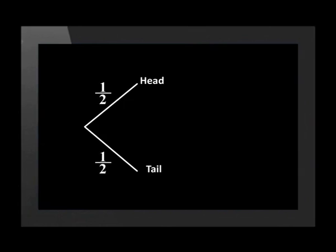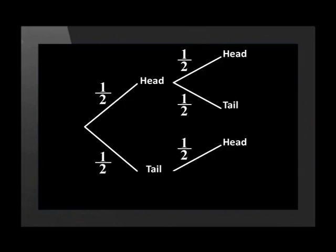If we get a head in the first toss, then there is a possibility that the second toss would give us a head again. If we get a head in the first toss, there is a possibility that the second will give us a tail. If we get a tail in the first toss, there is a possibility that the second is a head.